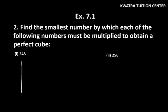Here we have 243. What will you do? You will get the factors first. What are the factors of 243? First, divide by 3. 243 divided by 3, you will get 81.